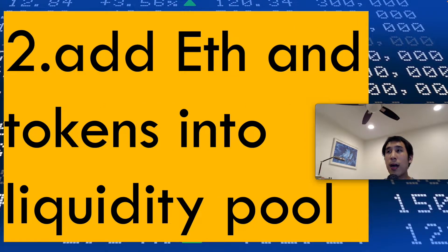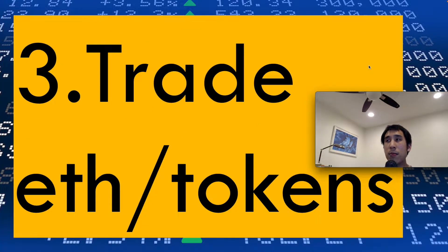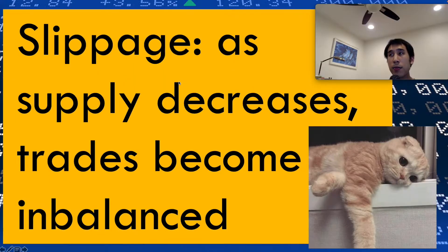First, I'm going to create the decentralized exchange contract and the ERC20 contract. After deploying those contracts, I'm going to add ether and the ERC20 token into the liquidity pool. Once the liquidity pool has funds in it, we're going to swap ether for tokens and vice versa. As we perform the swaps, we will experience something called slippage.